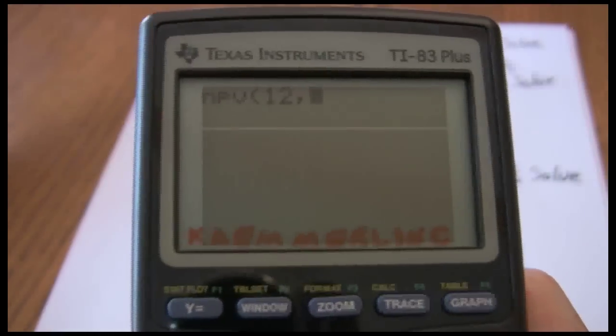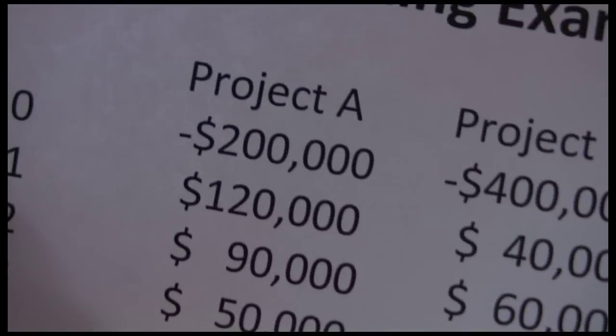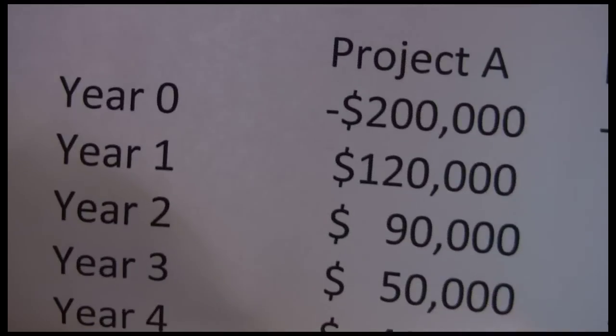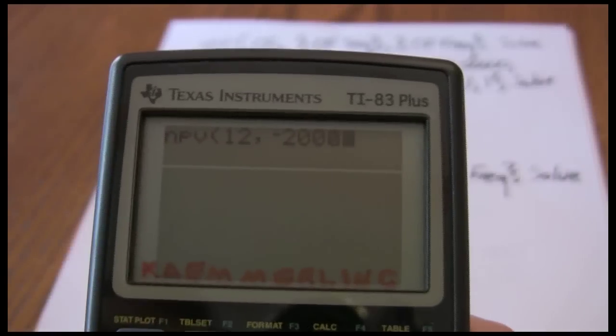Next I want my CF0. Negative 200,000 is my CF0, so make sure it's negative. 200,000.